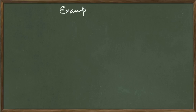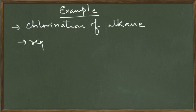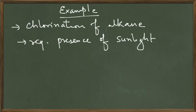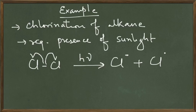As an example, you must have heard about the chlorination reaction of alkanes, and if you remember, it requires the presence of sunlight. This indicates that the reaction proceeds by homolytic cleavage. Here is how free radicals are formed: we have a chlorine molecule, and in the presence of sunlight it breaks homolytically. Each chlorine atom takes up one electron and forms a free radical. We will discuss this reaction in detail when we reach alkanes.